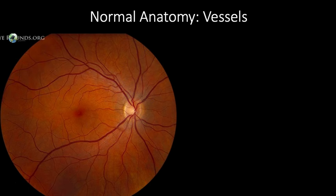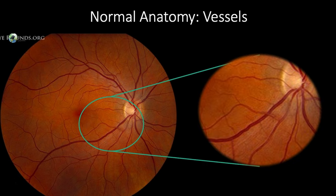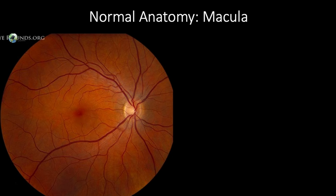Arteries and veins within these arcades can be identified via their respective morphologies. Veins are often dark red, wider, and have an inconspicuous or absent light reflex. Arteries are often bright red, narrower, and have a visible light reflex.